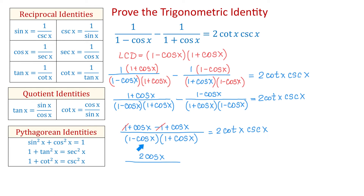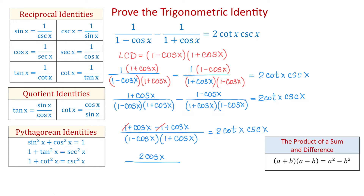In the denominator, to multiply these two expressions we will use the formula for the product of a sum and a difference. The formula is: a plus b times a minus b equals a squared minus b squared. According to this formula, 1 minus cosine of x times 1 plus cosine of x is 1 squared minus cosine squared of x. The new denominator will be 1 minus cosine squared of x. And on the right side: 2 cotangent of x cosecant of x.